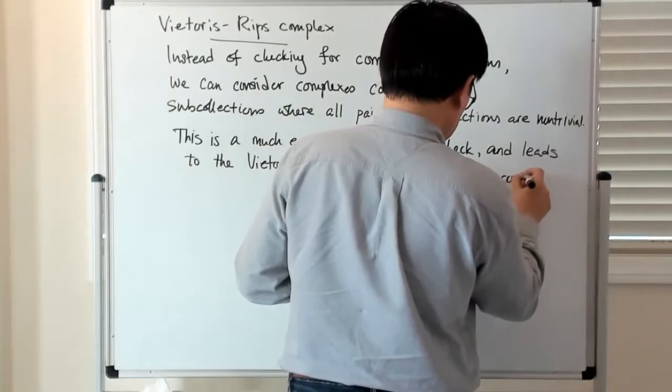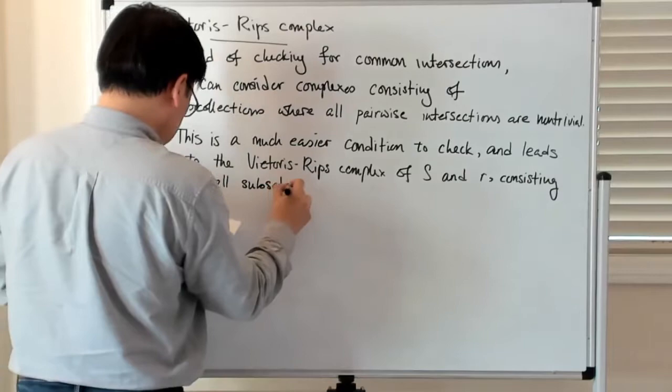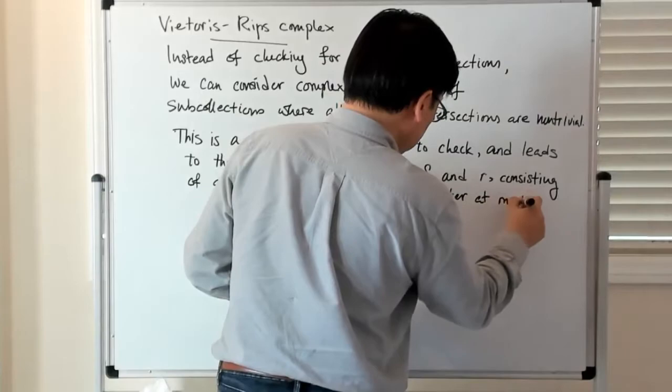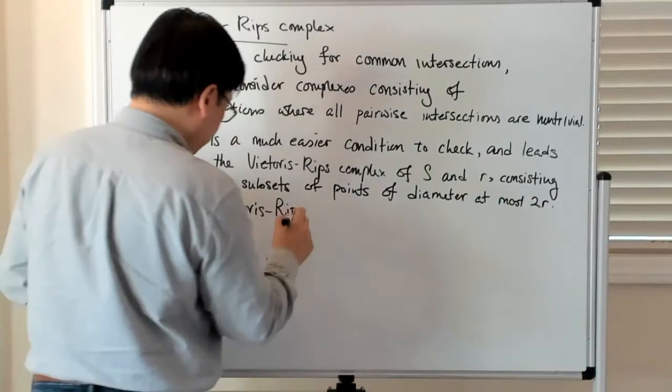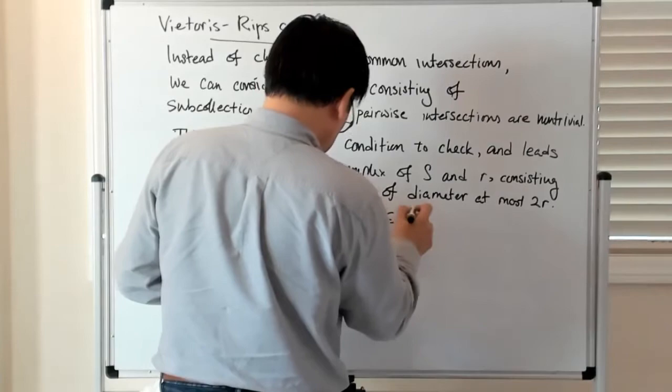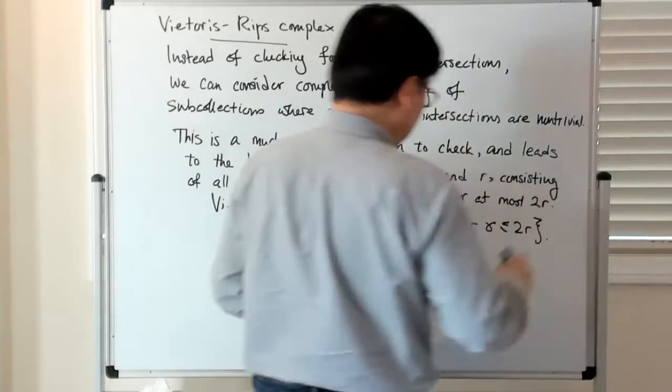So let me just be more explicit here. So this is the Vietoris-Rips complex for radius R. This is the set of collections of points with the property that the diameter of that collection of points is less than or equal to 2R.